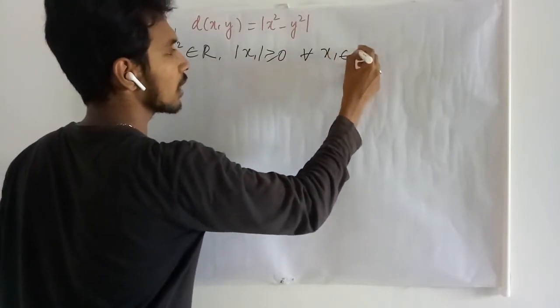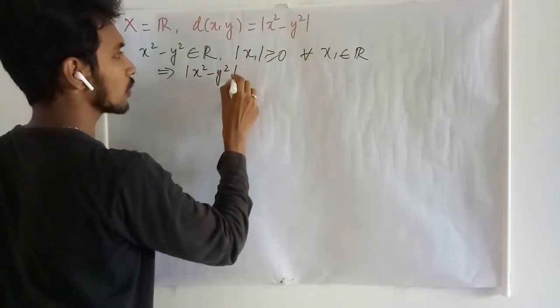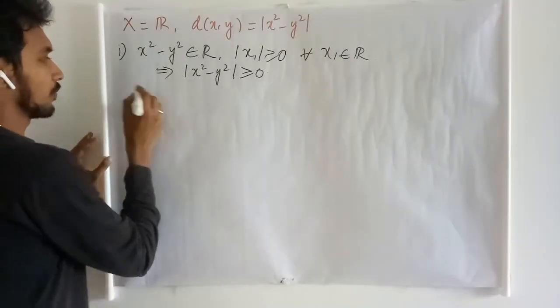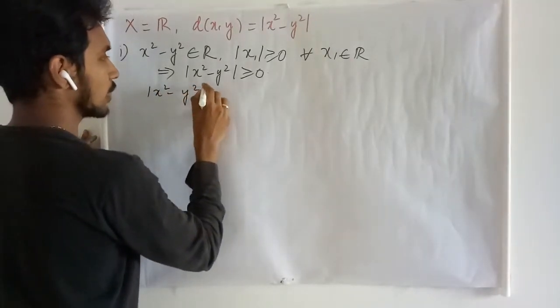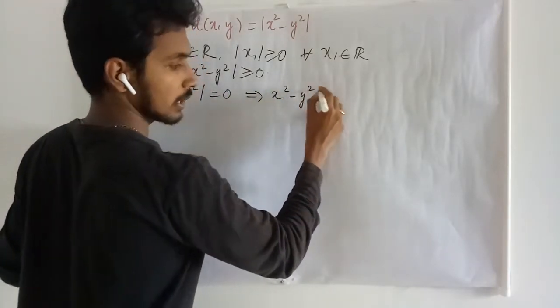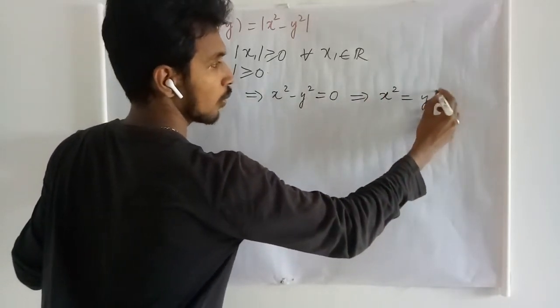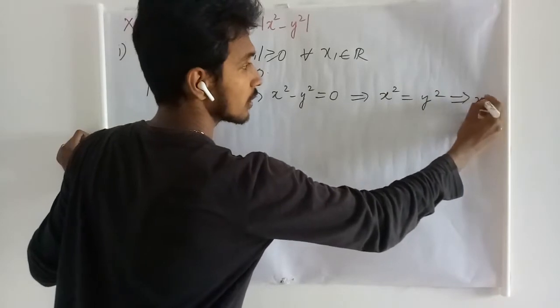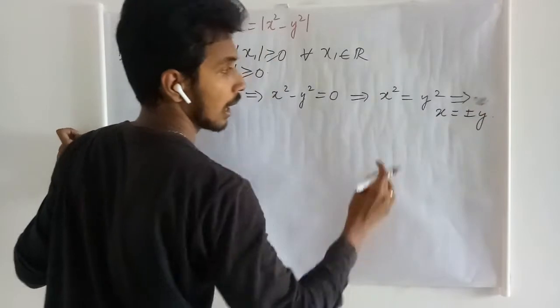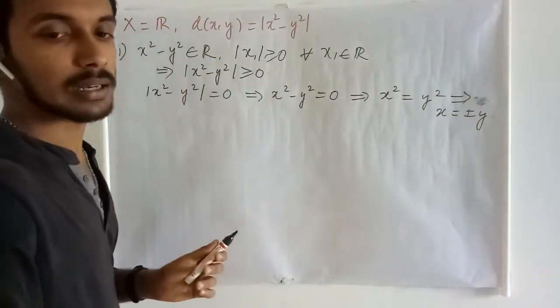The absolute of any value in R is going to be a non-negative quantity. This tells me that absolute of x squared minus y squared is non-negative. Now, the second condition: x squared minus y squared equals zero tells me x squared equals y squared, and this gives me x is equal to plus or minus y. I'm not exactly getting only one possibility. I'm having two possibilities.